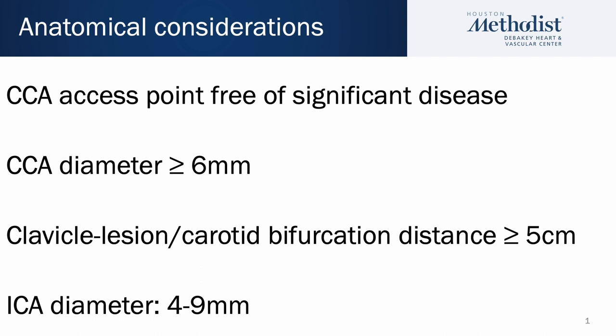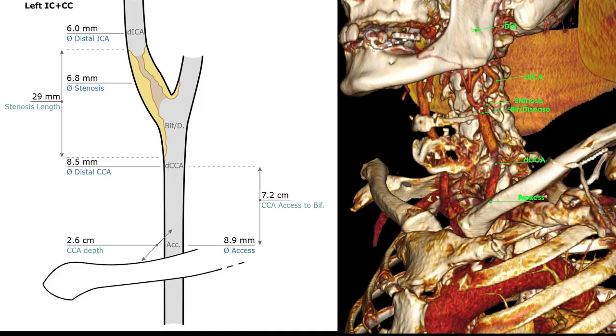The distance between the clavicle and the proximal end of the lesion, or the bifurcation, whichever is closer, has to be at least 5 cm. And the ICA diameter has to be between 4 and 9 mm.